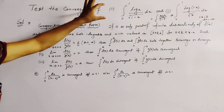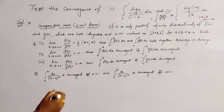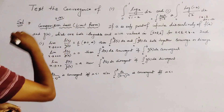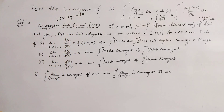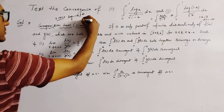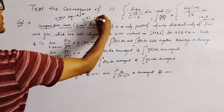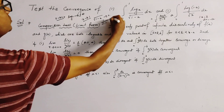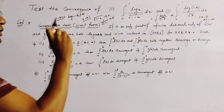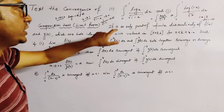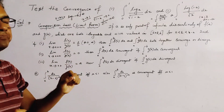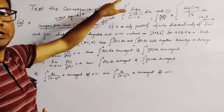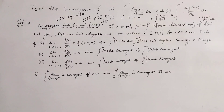Now we deal with problem number 1. We see that as x tends to 0⁺, log x tends to minus infinity, so 0 is a point of infinite discontinuity for this integration. Similarly, as x tends to 1, root(1 minus x) tends to 0, so 1 by root(1 minus x) tends to infinity — this is also a point of infinite discontinuity. For this reason, we split the interval [0, 1] into two intervals, like [0, 1/2] and [1/2, 1].